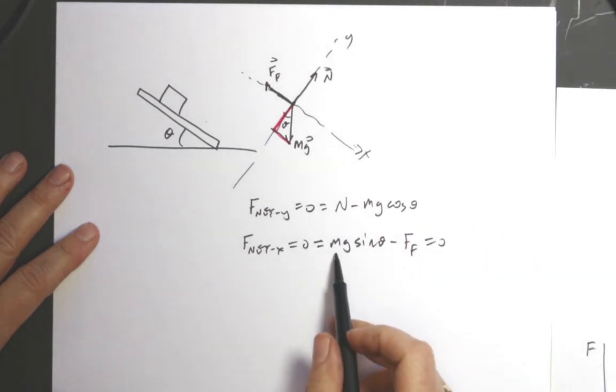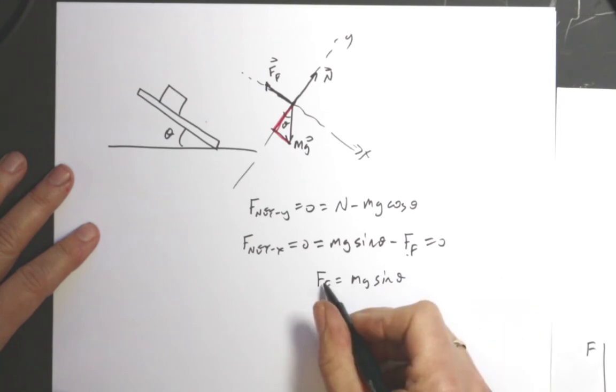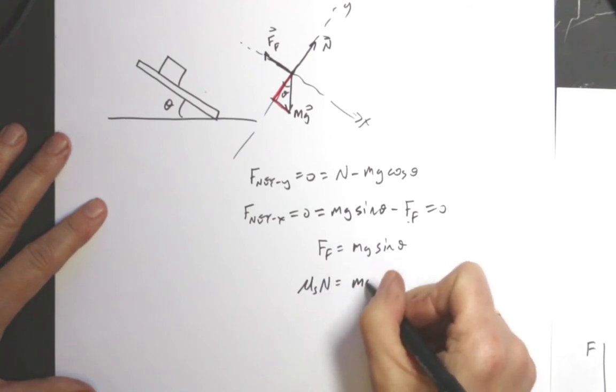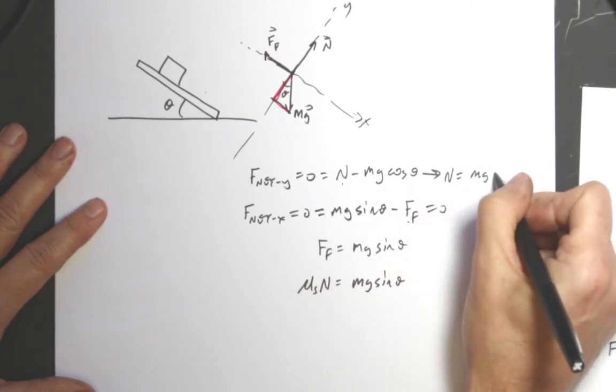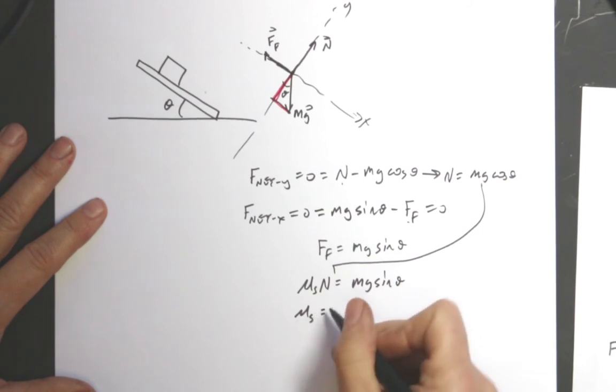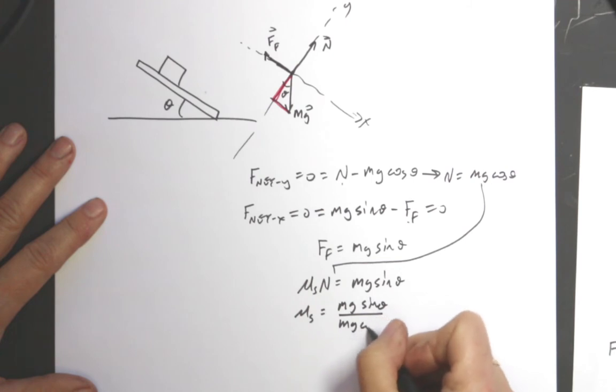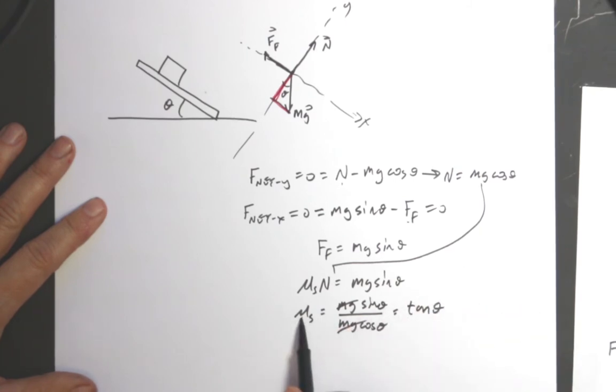So I can solve this for friction: F_friction equals mg sine theta. And then I can plug in the frictional force is equal to mu times N. The maximum frictional force is mu times N equals mg sine theta. And then I can say up here N equals mg cosine theta and plug that in. And I get mu_s equals mg sine theta divided by mg cosine theta. That cancels, that cancels, sine over cosine is tangent theta.